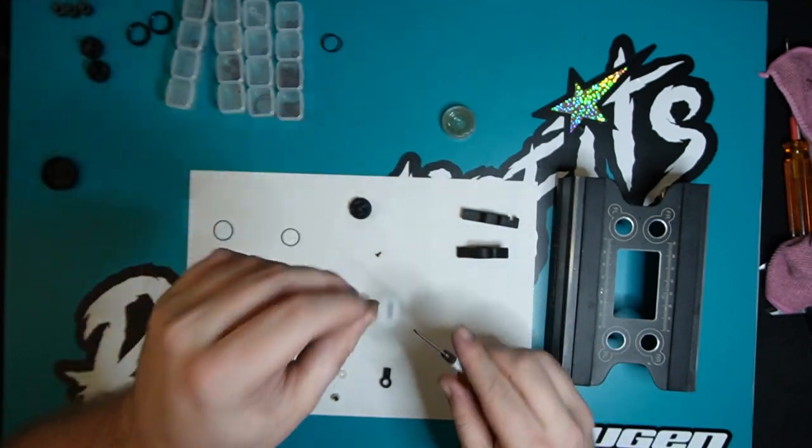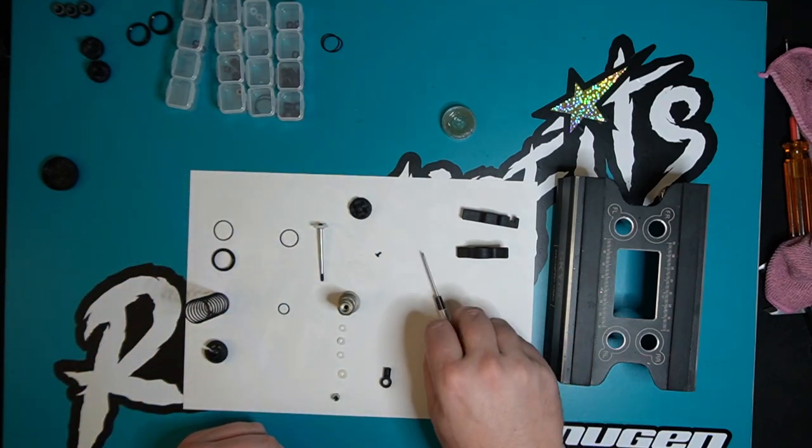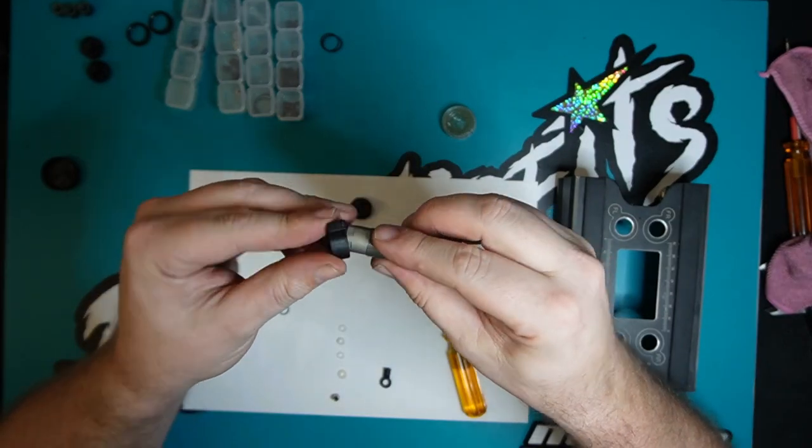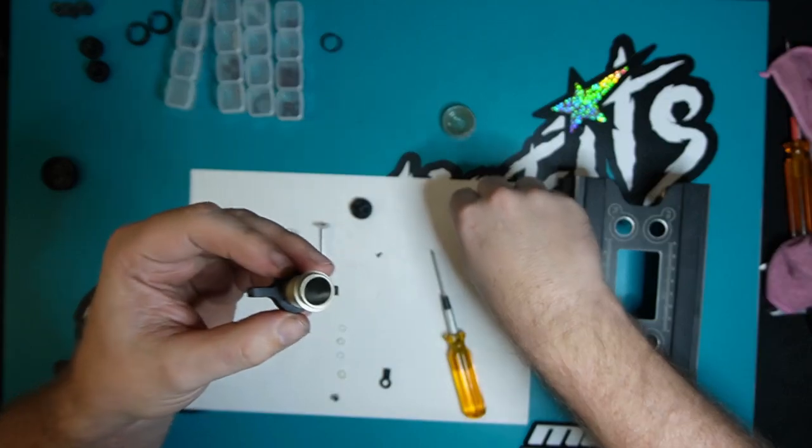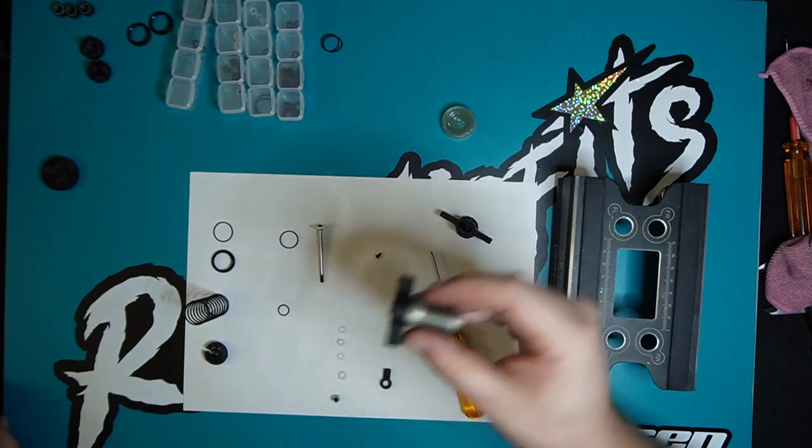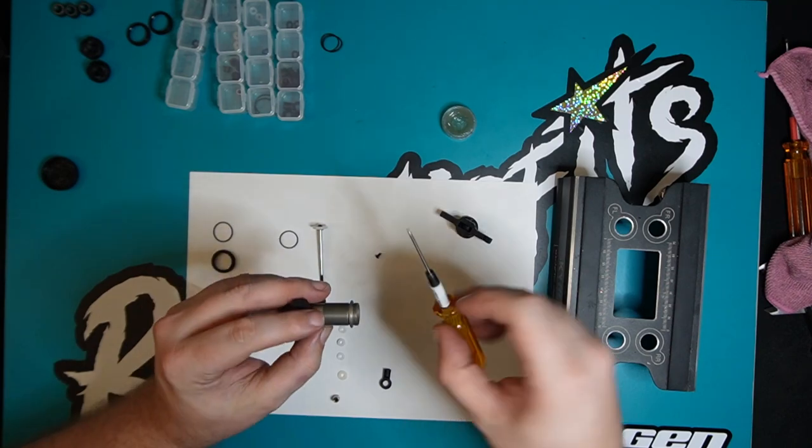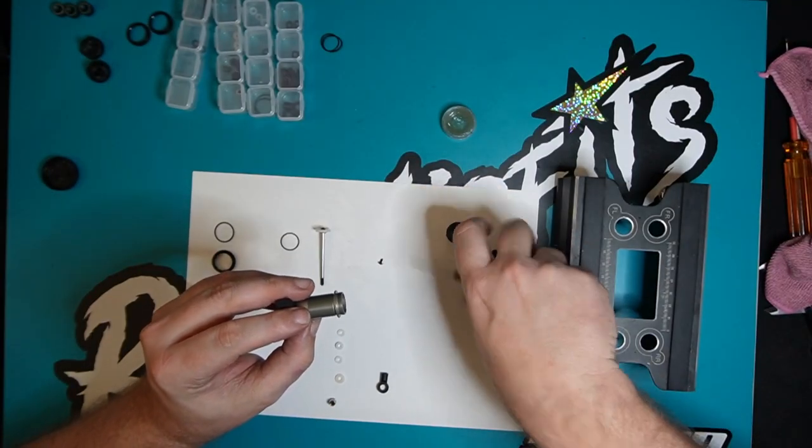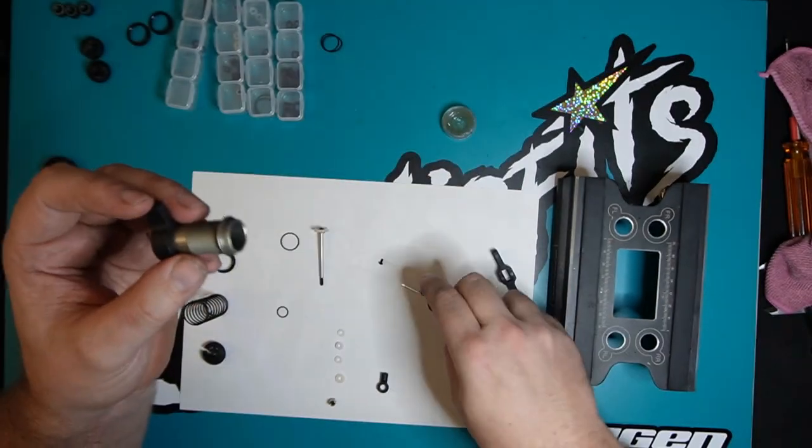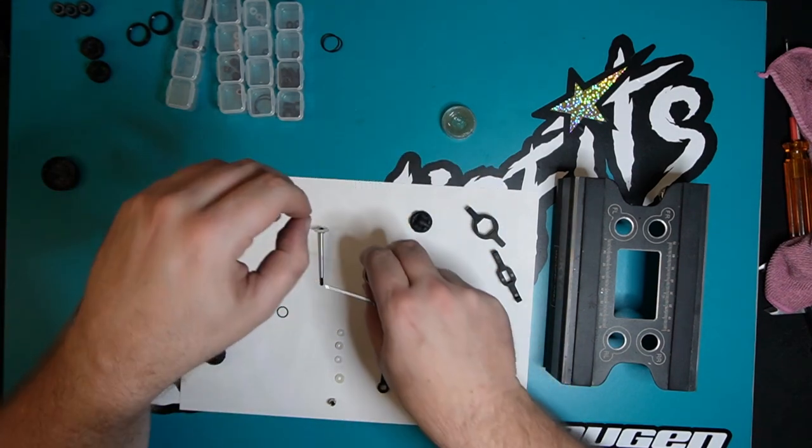There you go, one shock shaft and piston. Mugen give you these little funky tools to be able to tighten up the shock body to the shock cap, which saves me from my usual method of clamping the body in the pliers and then shoving a hex screw through the hole in the shock cap and talking it down. It's nice, but now I've got to carry more tools around with me.